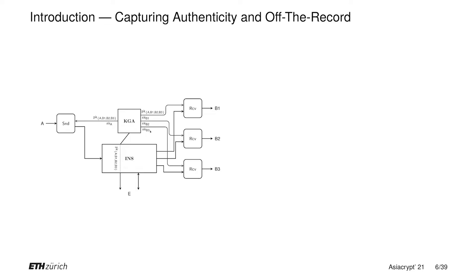What if Bob3 is dishonest? In this case, Bob3 does not run a converter anymore. Furthermore, Bob3's secret key also leaks to Eve.